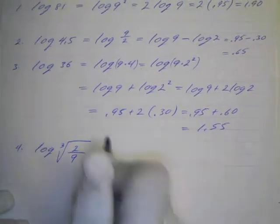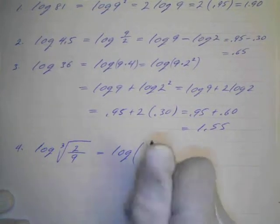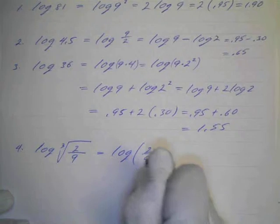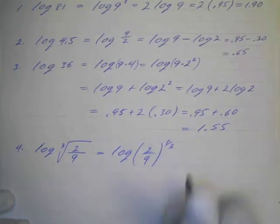Log to the base 10 of the cube root of 2 over 9. So we know that we can rewrite this first of all as an exponent, so 2 over 9 to the one-third power.